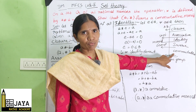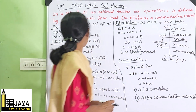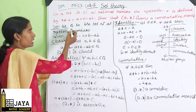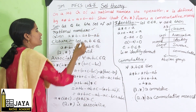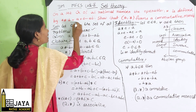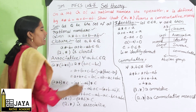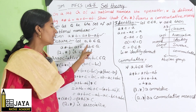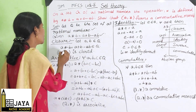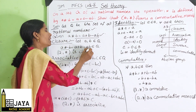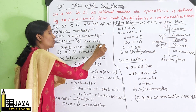Given Q is the set of all rational numbers and A★B = A + B − AB. For the closure property: let A, B ∈ Q, then A★B = A + B − AB, which also belongs to Q.